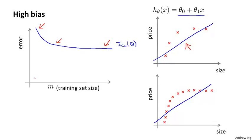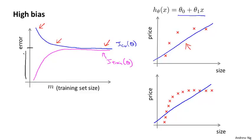How about the training error? In a high bias case, the training error will end up close to the cross-validation error, because you have so few parameters and so much data. At least when M is large, performance on the training set and the cross-validation set will be very similar. This is what your learning curves look like for a high bias algorithm — you end up with a relatively high value of both J_CV and J_train.